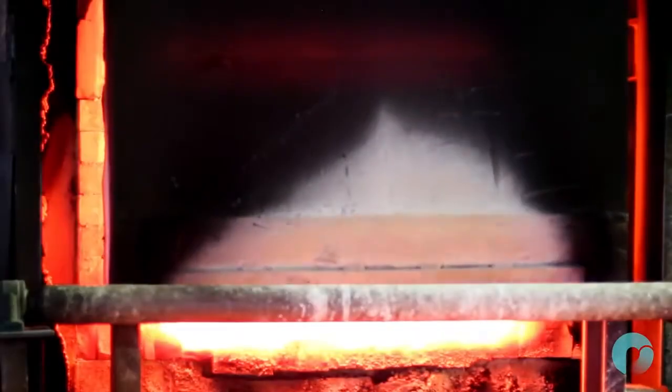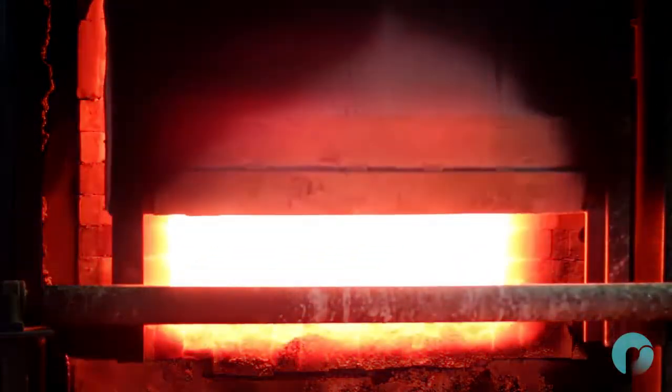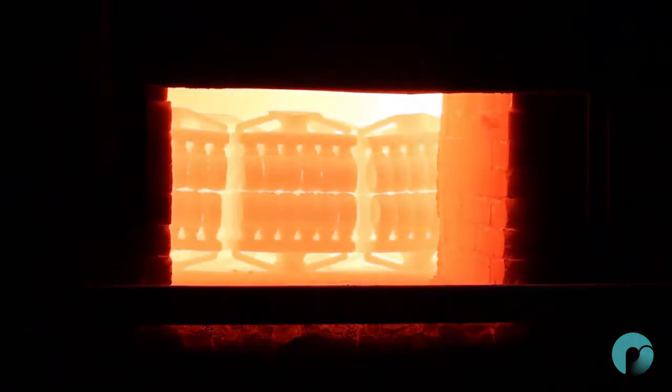The molds are then fired in the kiln at a temperature of 900 degrees Celsius. This fully cures the investments and prepares them for the casting. This is also the process of burning out the original Polycast model.